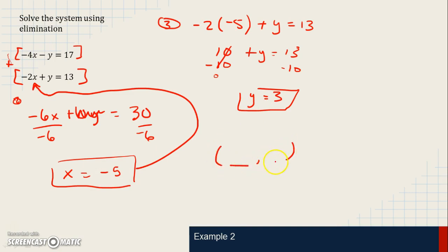Which one comes first? x comes first. That means y comes second. Just like in the alphabet, x comes before y. So we have negative 5 and we have 3. And that's how you'll type it into Schoology.